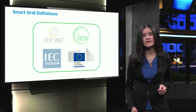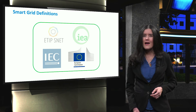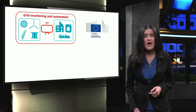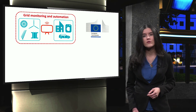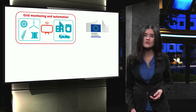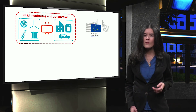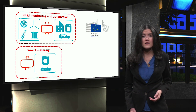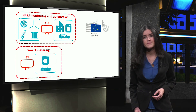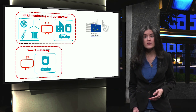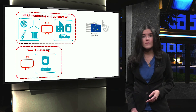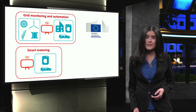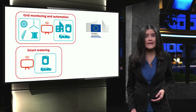The European Commission has also given a definition of the smart grid. The European Commission defines smart grid as energy networks that can automatically monitor energy flows and adjust to changes in energy supply and demand accordingly. When coupled with smart metering systems, smart grids can reach customers and suppliers by providing information on real-time consumption. With smart meters, consumers can adapt their energy usage to different energy prices throughout the day, saving money on energy bills by consuming more energy in lower price periods.